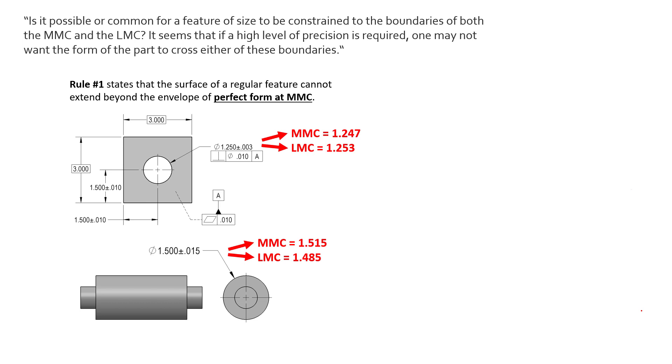form at MMC. So we see here two examples that are demonstrating two features of size, one internal, one external. For internal features of size, our Maximum Material Condition, or the state at which the most amount of material